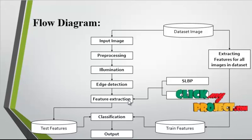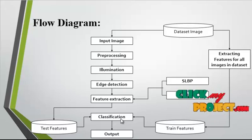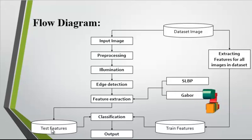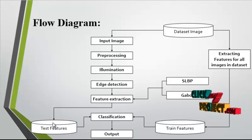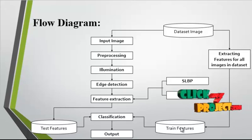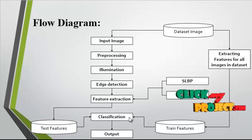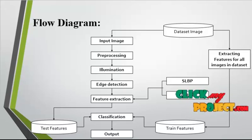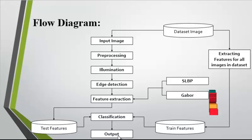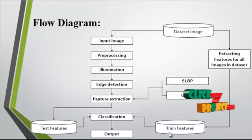After extracting features from the image, classification is undertaken. In the classification, we consider two major things: the test feature and the train feature. The test feature is extracted from the query image. The classification result is shown as the output in text form — the name of the recognized object.